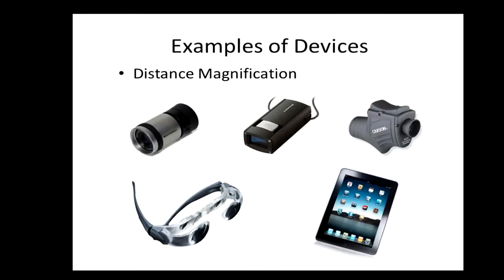Let's look at some of these devices. The telescope on the top left is the typical barrel type telescope that comes in many sizes and powers. Next to it are two examples of one-handed focusing devices. On the bottom left are adjustable distance glasses marketed for watching TV. The last one pictured here is a tablet, which has a camera feature that allows the user to take a photo and enlarge whatever might be in the distance — writing on the board, for example — or watching and enlarging action across the room in real time.